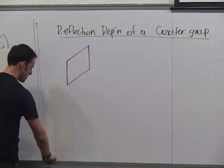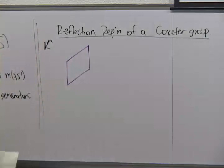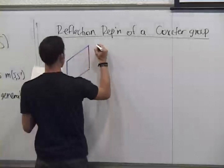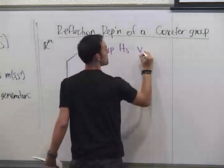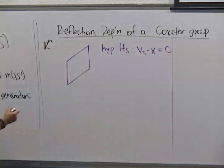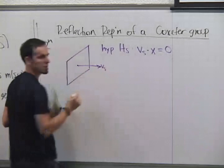Imagine that you're living in Rⁿ — all my pictures are going to be in R³. We have some hyperplane Hₛ given by the equation Vₛ · X = 0, where Vₛ is the normal vector to the hyperplane.